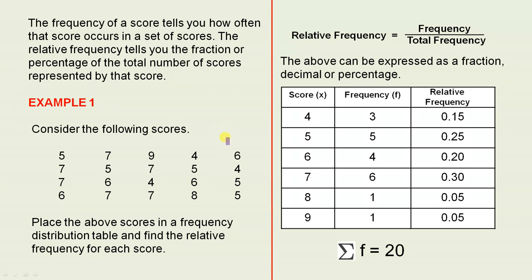Consider the following scores. So here we have 20 scores. We've been asked to place the above scores in a frequency distribution table and find the relative frequency for each score.